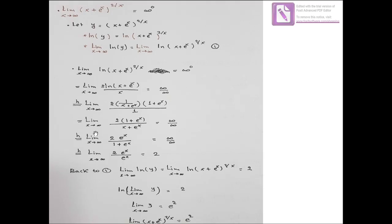Applying L'Hôpital's rule again: the derivative of 2(1 + e^x) gives 2e^x (the constant 2 stays), divided by the derivative of (x + e^x) which is 1 + e^x. Now we have 2e^x/(1 + e^x). Evaluating the limit as x→∞ still gives ∞/∞.